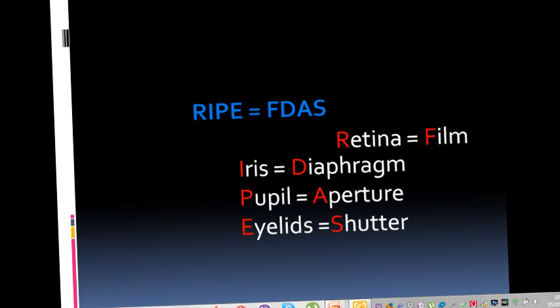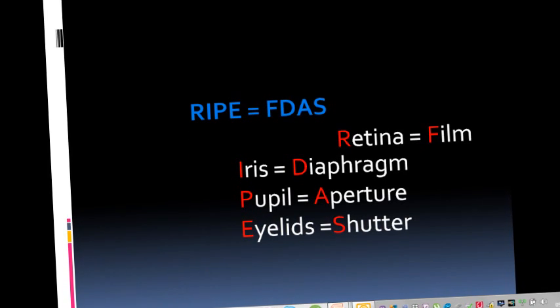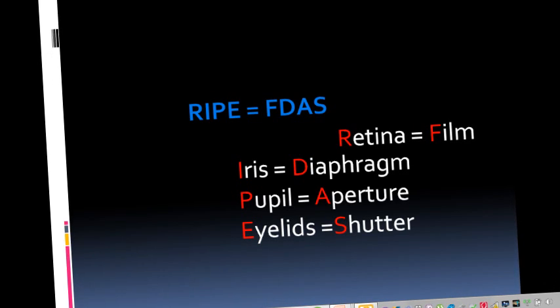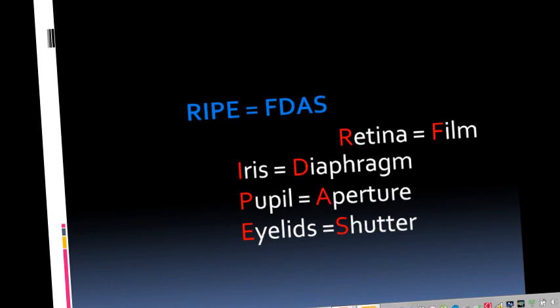Retina is analogous to film, iris to diaphragm, pupil to aperture, eyelids to shutter.